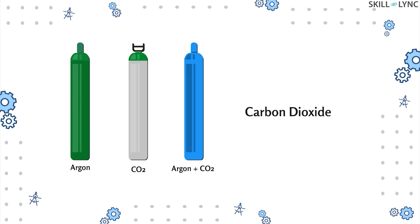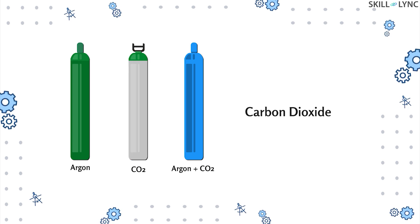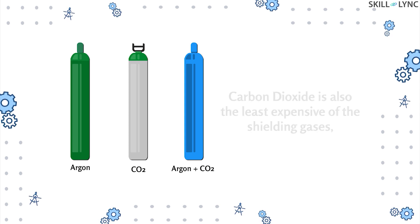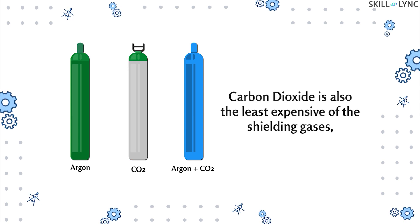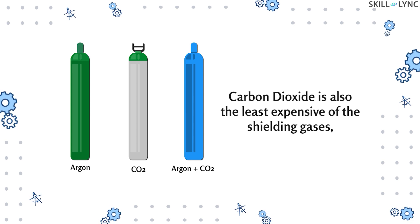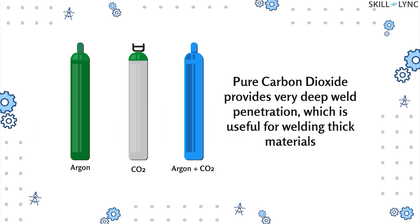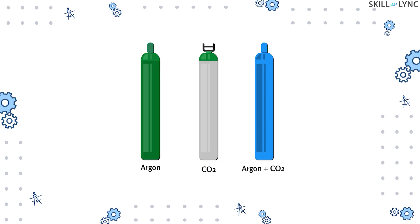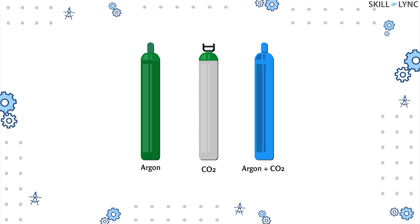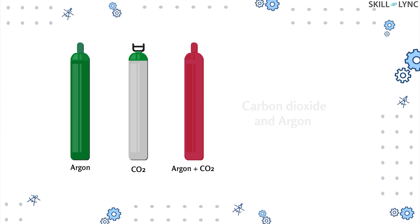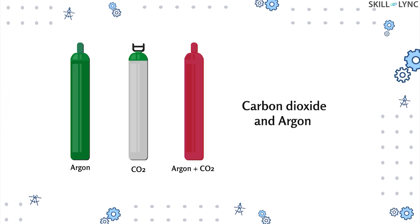Carbon dioxide is also a common shielding gas used in MIG welding and the only one that can be used in its pure form without the addition of an inert gas. It is also the least expensive of the shielding gases, making it an attractive choice when material costs are the main priority. Pure carbon dioxide provides very deep weld penetration, useful for welding thick materials, but it produces a less stable arc and more spatter.